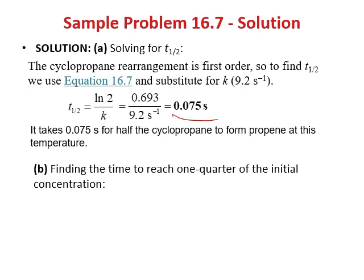Whenever you have a rate constant, you can calculate the half-life. For a first-order reaction, the equation is: half-life = ln2 / k = 0.693 / 9.2 ≈ 0.075 seconds.